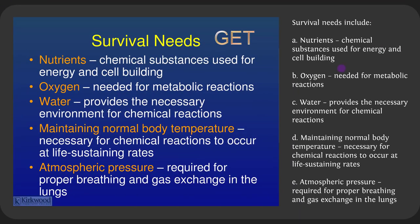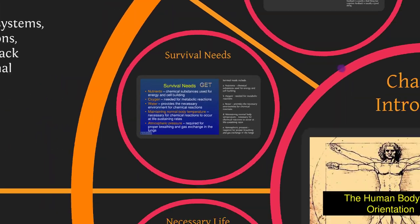Survival needs include nutrients (chemical substances for energy and cell building), oxygen (needed for metabolic reactions to make energy), water (provides the environment for chemical reactions), maintaining normal body temperature (necessary for chemical reactions to occur at life-sustaining rates — chemical reactions can't speed up or slow down too much), and atmospheric pressure (needed to help get oxygen into the lungs).